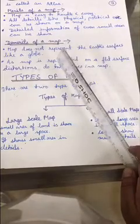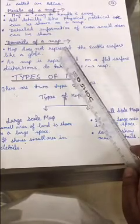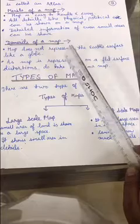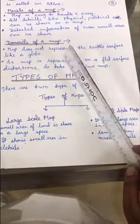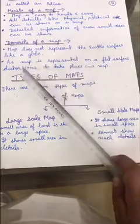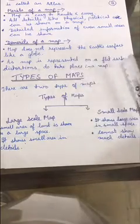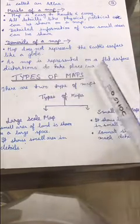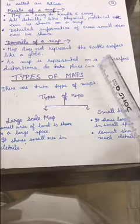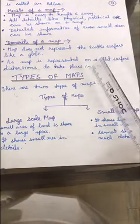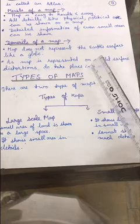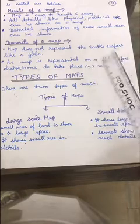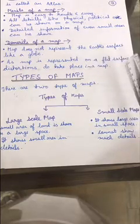Demerits of a map: Map does not represent the Earth's surface like a globe. As it is drawn on a flat surface, so it cannot show the Earth's spherical shape. As map is represented on a flat surface, distortions do take place in a map. Distortion means some changes - it will not be very precise. Some changes may take place due to the flat surface.